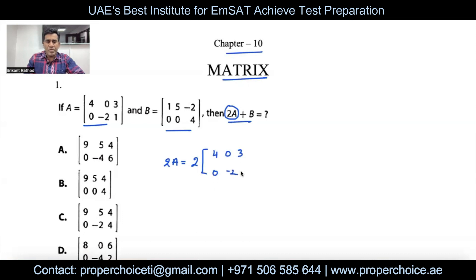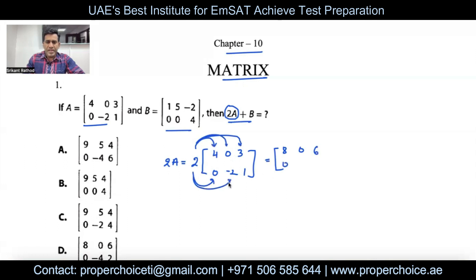Multiply each and every element: 2 times 4 is 8, 2 times 0 is 0, 2 times 3 is 6, 2 times 0 is 0, 2 times negative 2 is negative 4, and 2 times 1 is 2. Now this result should be added with matrix B.